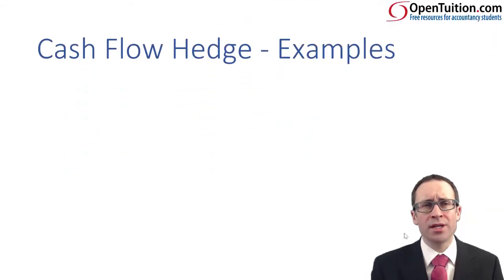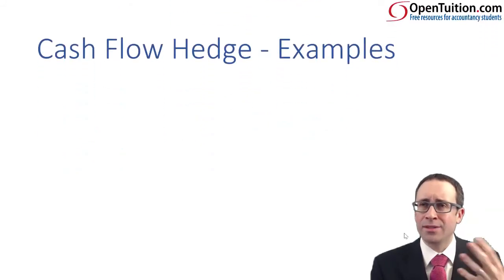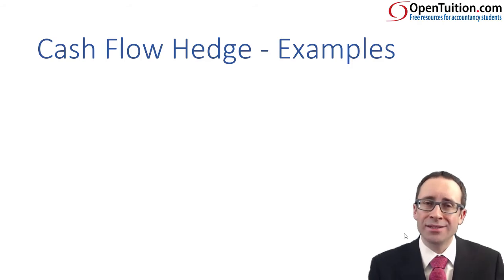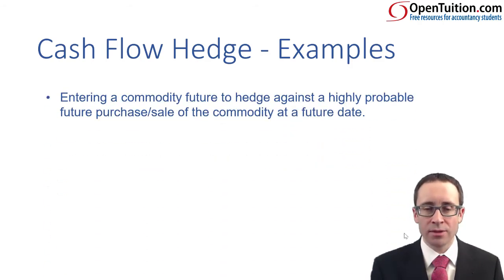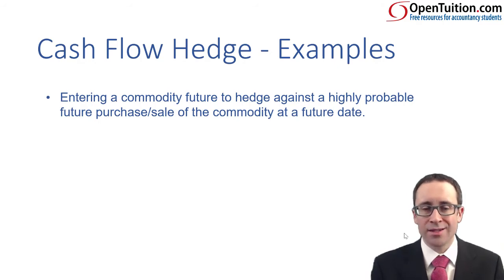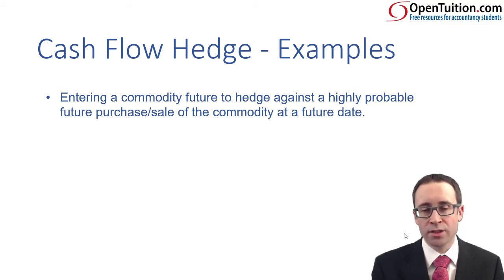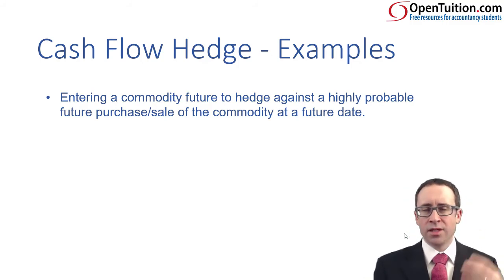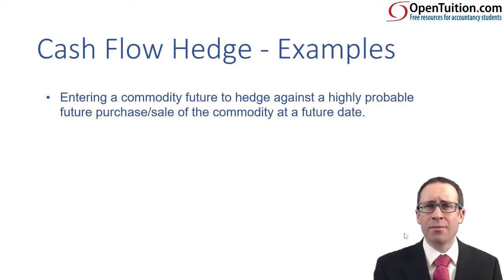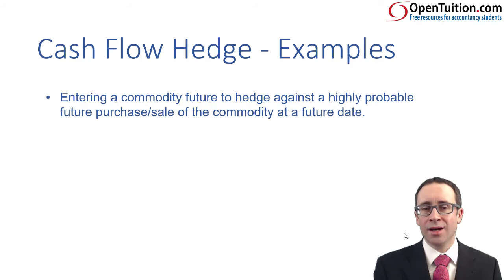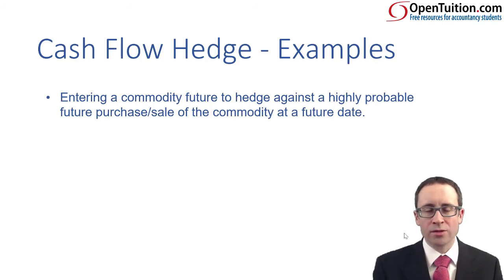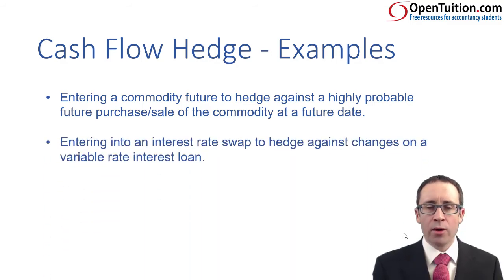In terms of exam examples, watch out for what you could get regarding identifying or thinking about accounting treatments. We've just looked at the purchase of oranges — entering into a commodity future for the highly probable purchase of a commodity at a future date. We always see things as a purchase of a commodity as opposed to the sale, but IAS 39 covers both.